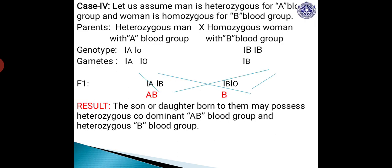Case 4: let us assume the man is heterozygous for A blood group and the woman is homozygous for B blood group. The parents are a heterozygous man with A blood group and a homozygous woman with B blood group. At this point, let me explain that this kind of crossing we call a reciprocal crossing. In genetical research work, some geneticists change the homozygosity or heterozygosity of the parents.